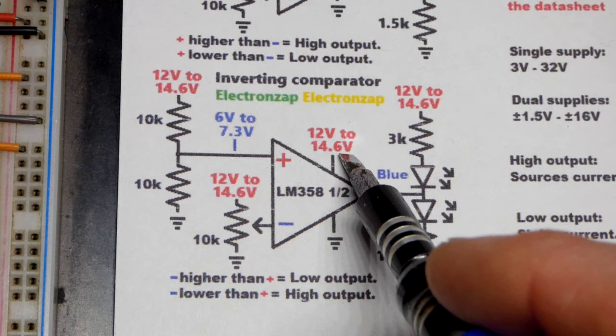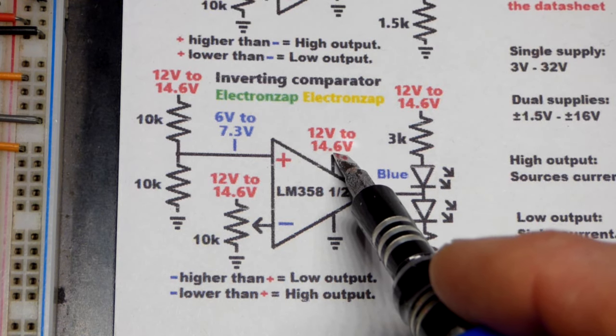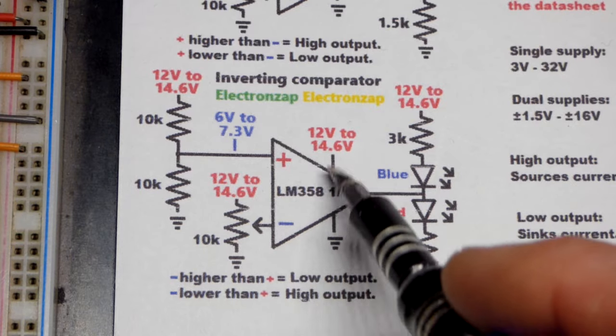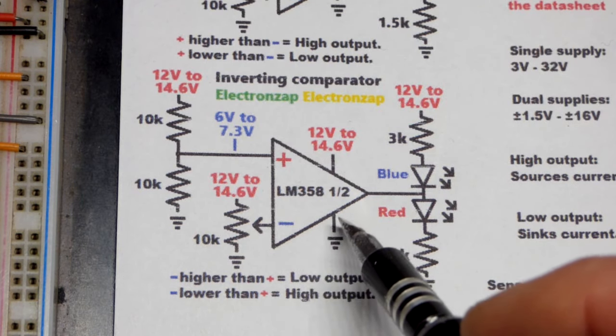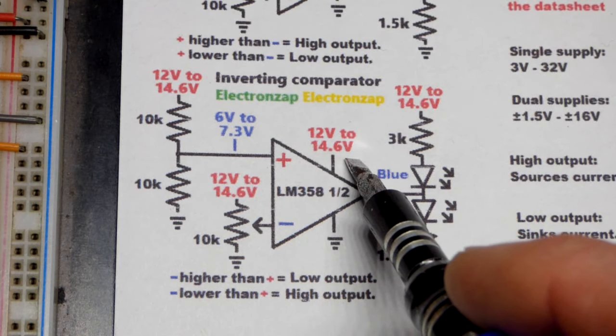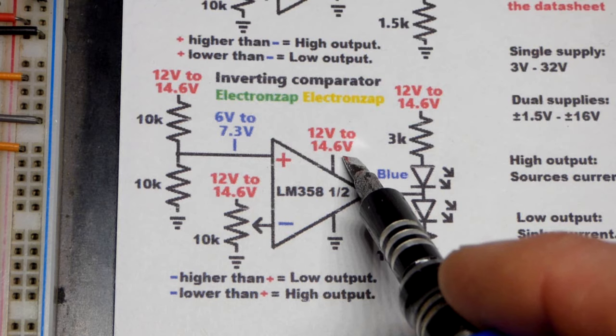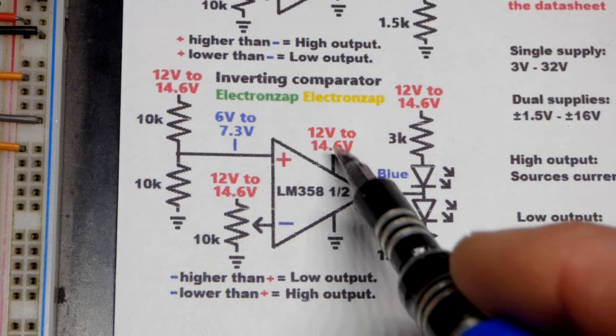First off, it might be 14.6 if there's a charger attached, 13.6 if the battery is fully charged. So, if you never have a circuit going while the battery is being charged, for whatever reason, then you don't even have to worry about it. 13.6 will be your maximum lithium iron phosphate fully charged battery.